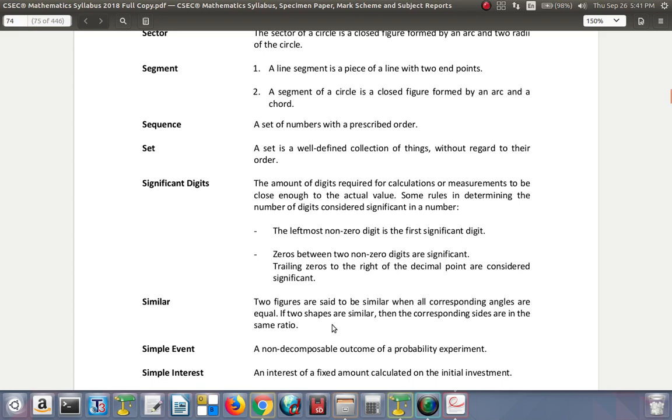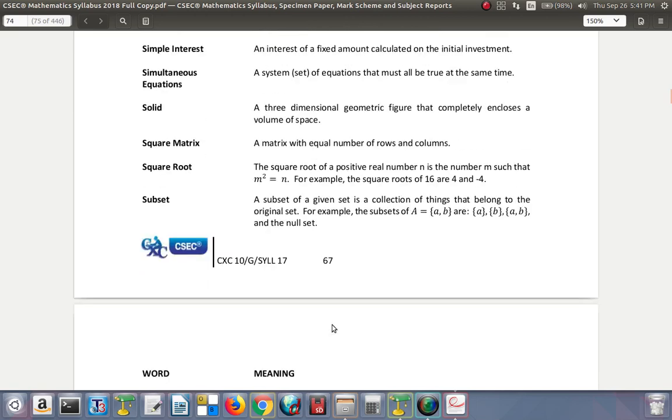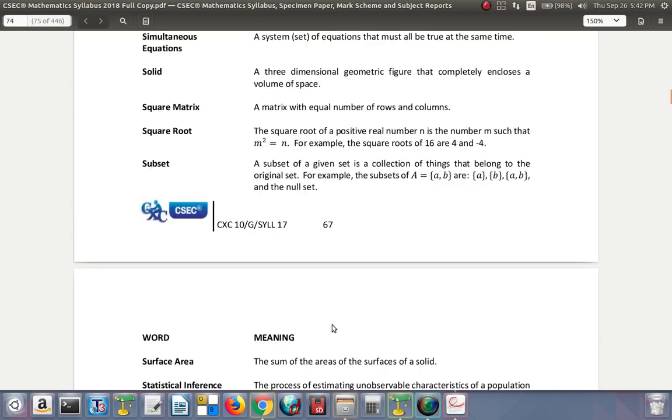Simple event: a non-decomposable outcome of a probability experiment. Simple interest: an interest of a fixed amount calculated on the initial investment. Simultaneous equations: a system or set of equations that must be true at the same time.